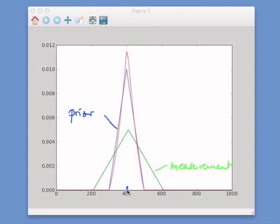So, the prior is centered at 400, whereas the measurement is slightly off here at 410. And the measurement is twice as wide as the prior. And now, if you look at the posterior, you see the following.